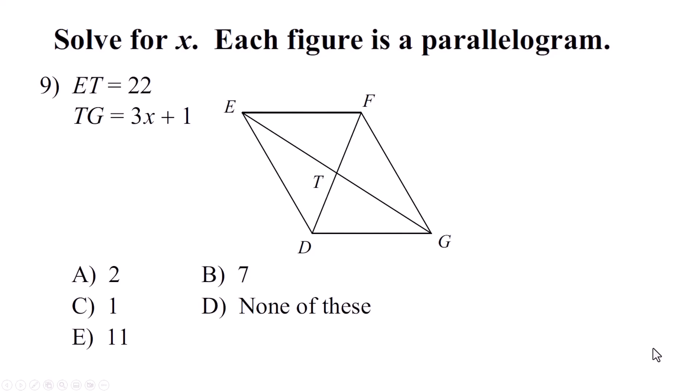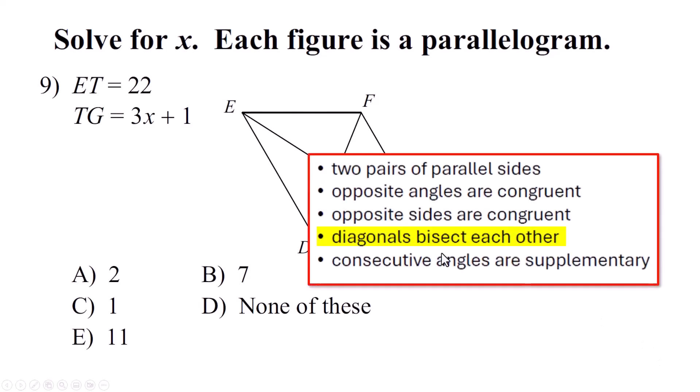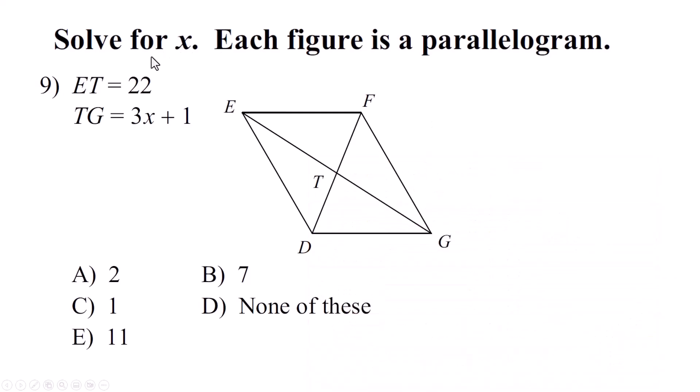Number 9. Solve for x. Each figure is a parallelogram. Well we're talking about diagonals now and it says diagonals bisect each other. Okay. What does that mean? It means they cut each other in half. It doesn't mean they're the same. One of these looks longer than the other one but where they meet in the middle is going to cut each one exactly in half. So this side equals that side and this side equals that side. ET is 22. So this piece is ET and TG is here. Oh look at that. They're on the same diagonal. They're half of the same one. That means those two things are equal to each other. Time for algebra. 3x plus 1 equals 22. Subtract 1 from both sides. 3x equals 21 and we have x equals 7. Kaboom. You have to know the properties in order to be able to do that. The math isn't that hard.